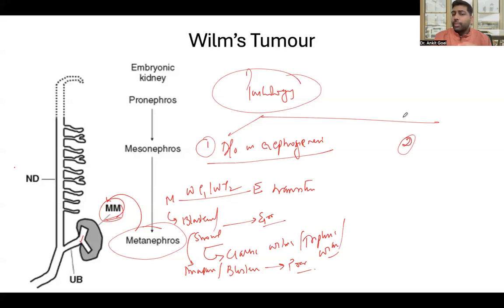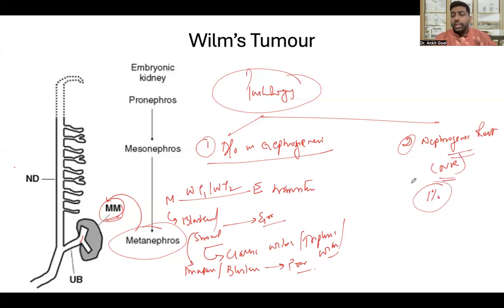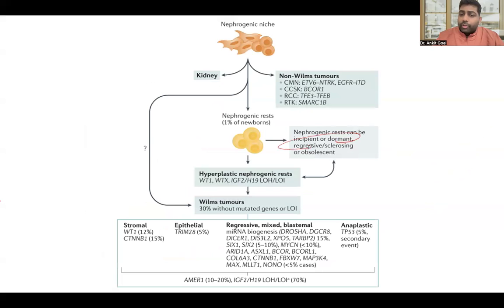The second pathology for the Wilms tumor is the nephrogenic rest. Normally, 1% of infants are born with cells present in the kidneys — they can be present in the tubules or in the perilobar or interlobar region. These cells can either undergo regression or remain dormant. However, some of these cells can undergo hyperplasia and get mutated to form a Wilms tumor.